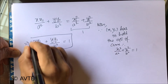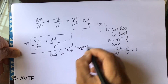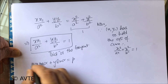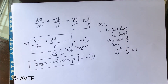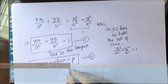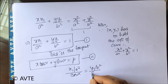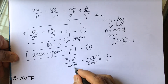So the equation of the tangent at x1, y1 will be this. Now this is the tangent and they are saying x cos alpha plus y sine alpha is the tangent, so we can compare the two. Because both are the tangents, there is a rule that if two lines are the same then a1 by a2 equals b1 by b2 equals c1 by c2. That is x1 over a square upon cos alpha equals y1 over b square upon sine alpha equals 1 upon p.